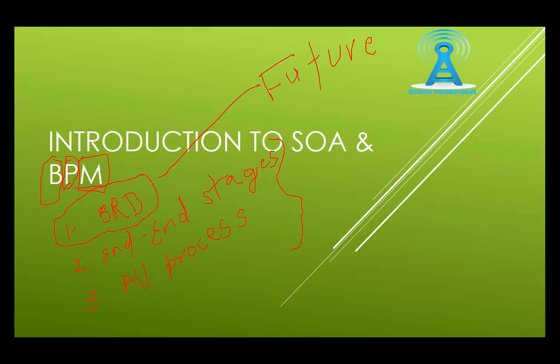Are we clear on this? Great. So this is what the business process model is, and now we are going to continue with the service-oriented architecture. This chapter covers both topics, and I just wanted to summarize why before we get into it.